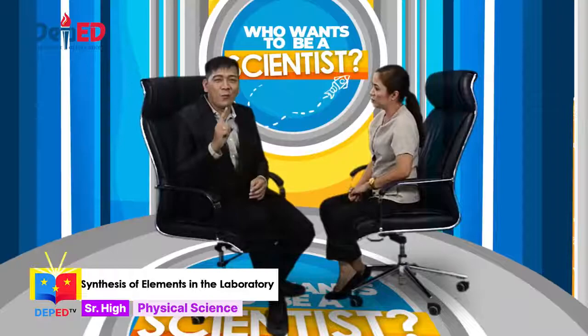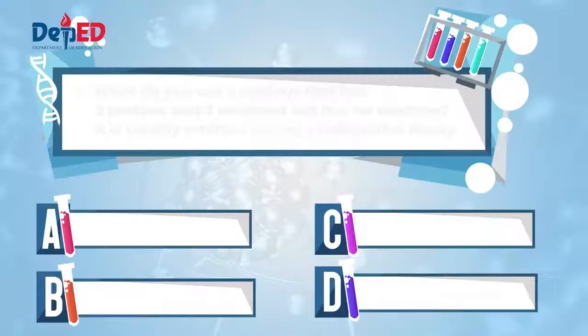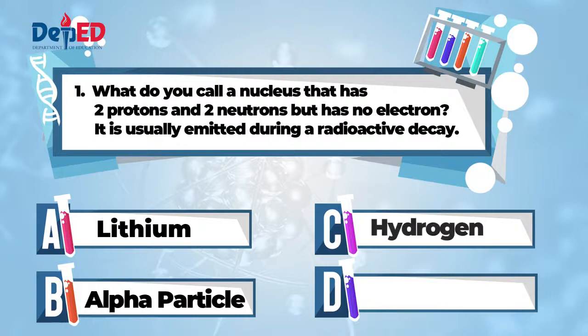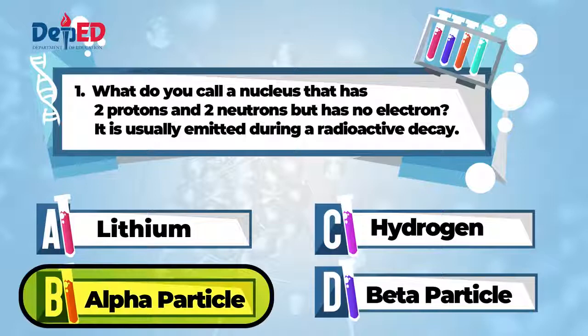If you're ready, let's start with the very first question. Question number one. What do you call a nucleus that has two protons and two neutrons but has no electrons? It is usually emitted during a radioactive decay. A. Lithium. B. Alpha particle. C. Hydrogen. Or D. Beta particle. Let me check. Definitely, it is not hydrogen because hydrogen has one proton. And obviously, it is not lithium because lithium has three protons. Beta particle is emitted during radioactive decay, but it is not made up of protons or neutrons. It is made up of high-energy electron or a fast-moving electron. So, my answer is letter B. It's the alpha particle. Because alpha particle has two protons but has no electrons.